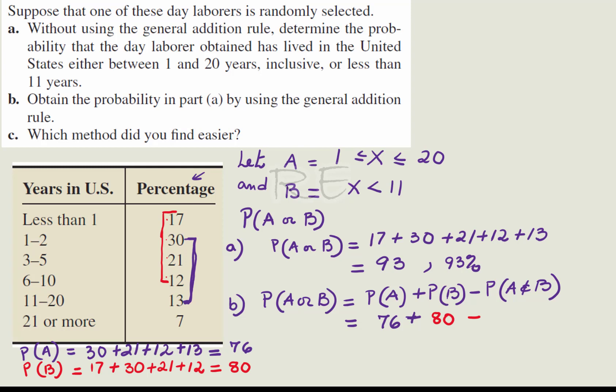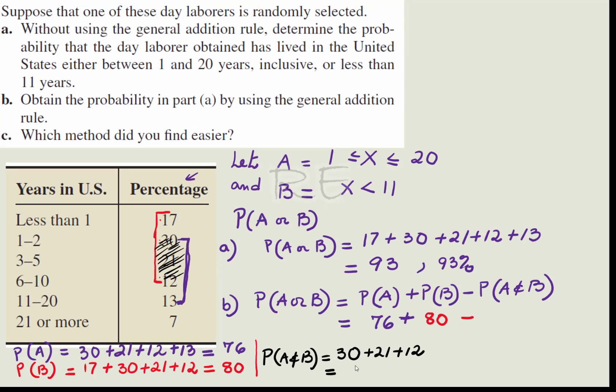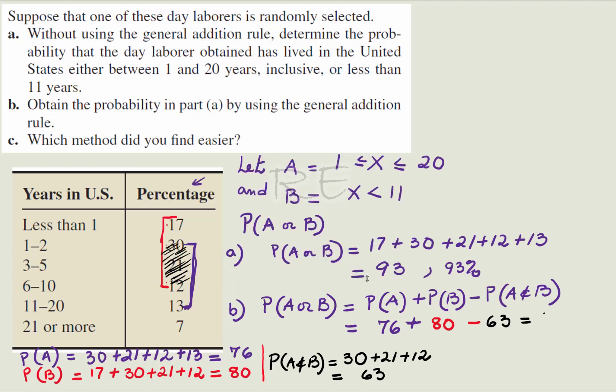Let's go back to B, 76 plus P of B which is 80 minus P of A and B, the overlap. The overlap would be 30, 21 and 12. So P of A and B is equal to 30 plus 21 plus 12, and we get 63. So 76 plus 80 minus 63 will give us 93% also.